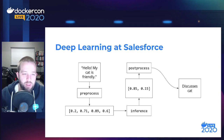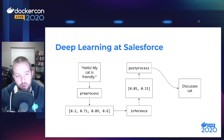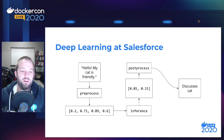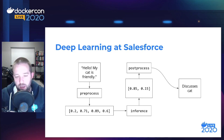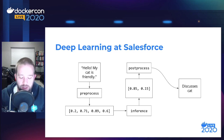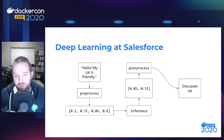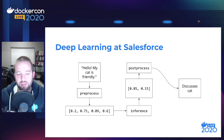Here we have a data flow diagram of this process. The input is 'Hello, my cat is friendly.' We send that into the pre-process stage, which returns a vector of four numbers — this is called an embedding vector, and it's part of natural language processing. Many NLP neural networks use this embedding vector as an input. We feed that into the neural network, which spits out two numbers. We then feed those into the post-process stage, which tells us the neural network is saying this sentence discusses a cat.